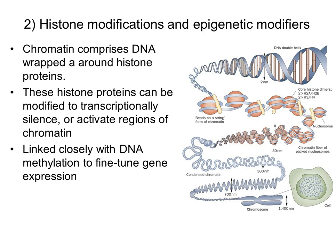DNA methylation is the first epigenetic mechanism. The second major one is histone modifications. When we talk about histones we're talking about modifications of the proteins that DNA is wrapped around. Chromatin consists of DNA wrapped around an octamer of histone proteins, with a sealing histone H1. It is modifications to these histone proteins that decide whether the chromatin is active and allowed to be transcribed, or silent. We'll look at the enzymes that put small tags on the histones to allow chromatin to be condensed or not.